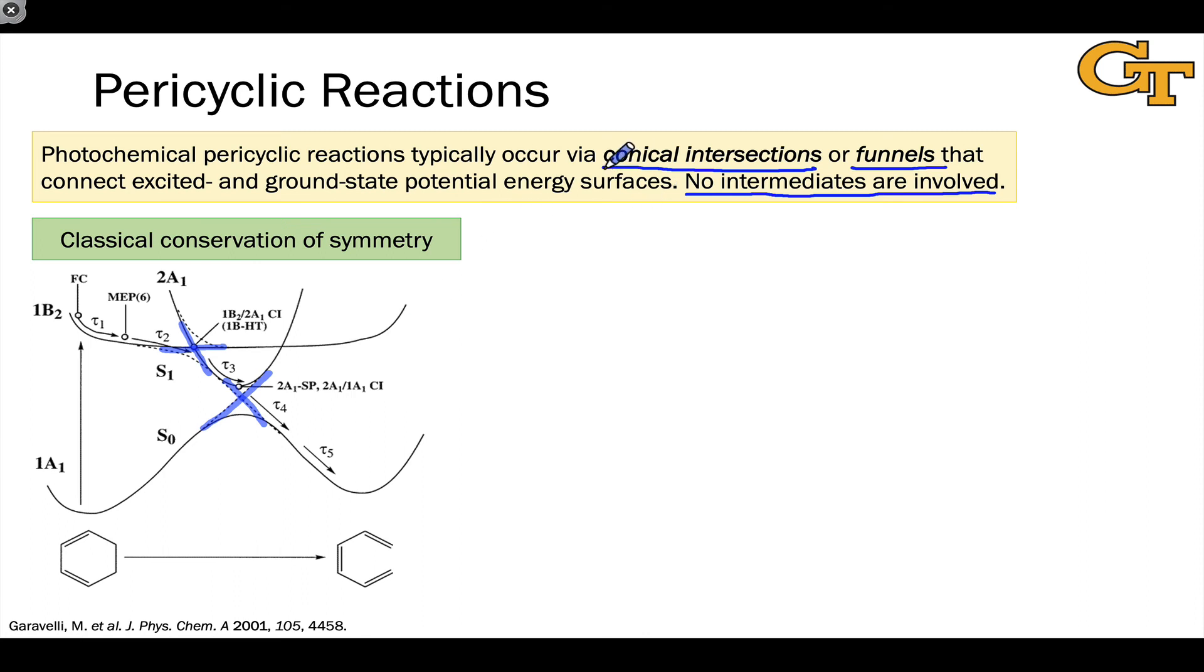The reason these are called conical intersections is because if we think about these in three dimensions, they have a cylindrical symmetry that turns this X into two cones that share a top point. And these are the places where the representative point can cross from one potential energy surface to another.